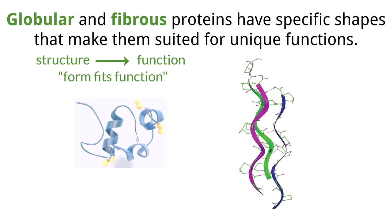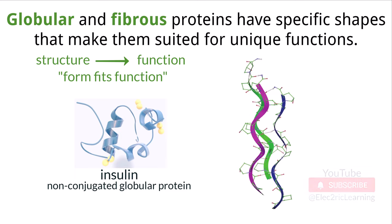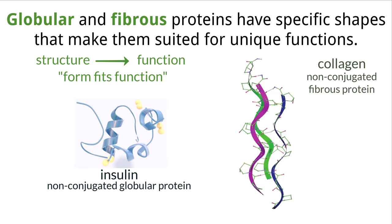The form of a protein directly impacts its function. To go through more examples, we can take a look at the difference between insulin, which is a non-conjugated globular protein, compared to collagen, which is a non-conjugated fibrous protein. As we discussed earlier, insulin has a globular shape, making it round as amino acids interact and fold the protein structure in.